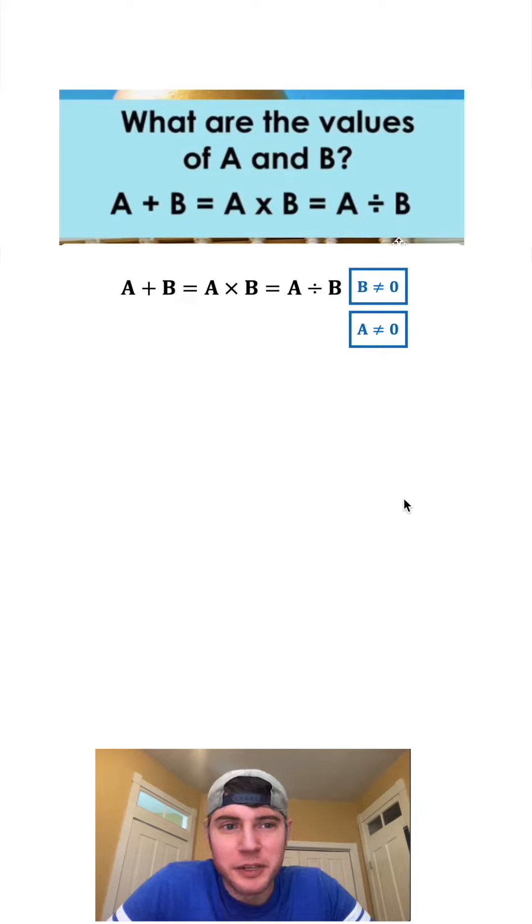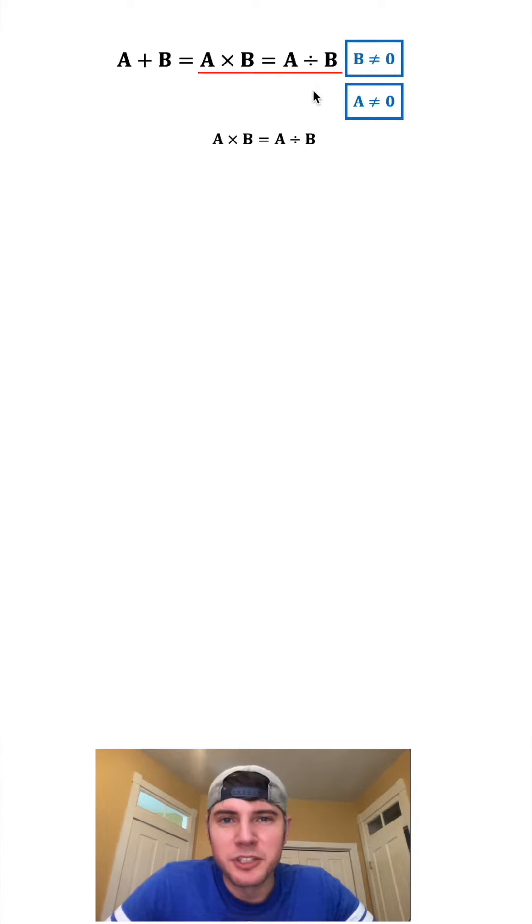Let's get rid of this stuff and bring this up here. Now let's look at A times B equals A divided by B. Let's rewrite it like this and multiply both sides by B. And on the right hand side since these B's cancel we just have A.